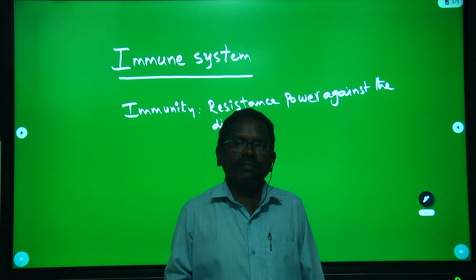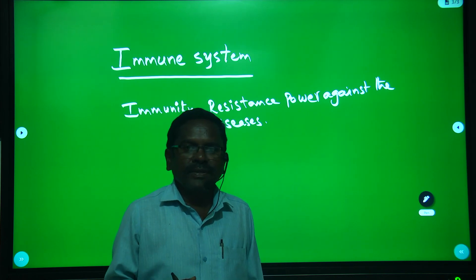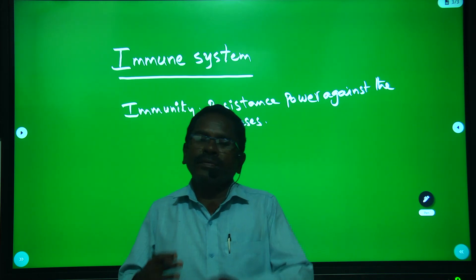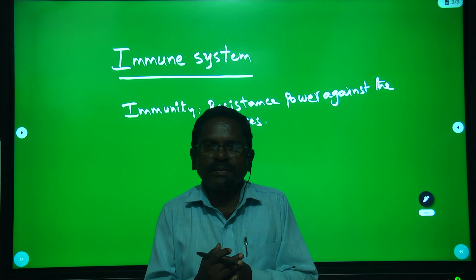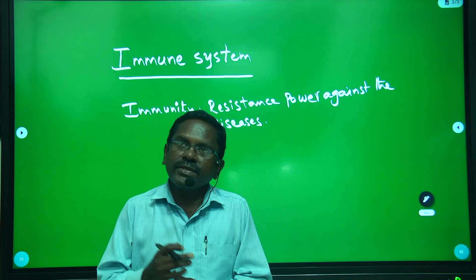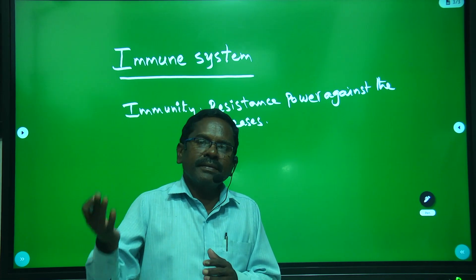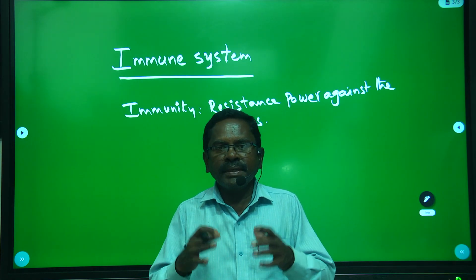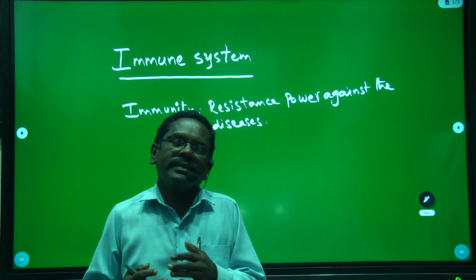There are three lines of defense. When parasites try to enter the body, each line prevents their entry at a different stage. If pathogens cross the first line, they enter into the second line. In the second line also they may be killed.